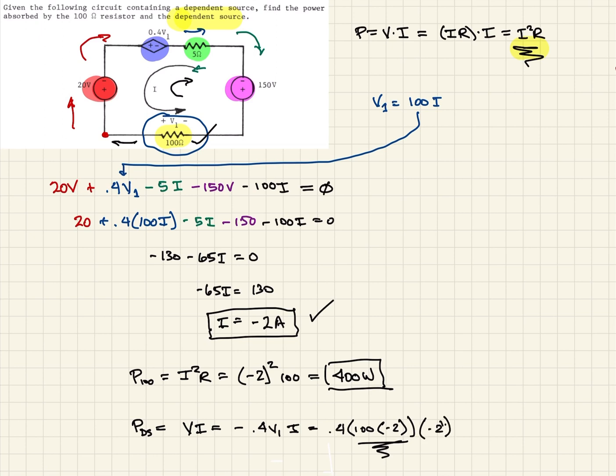When we calculate that out, we should get negative 160 watts. It's negative because it is being supplied. So here's our power dissipated from the resistor. Here's the power supplied by our dependent source.